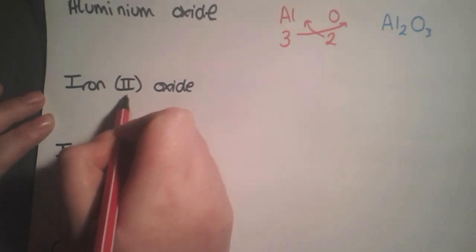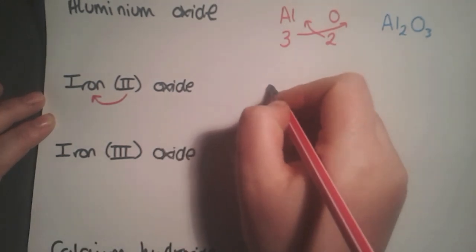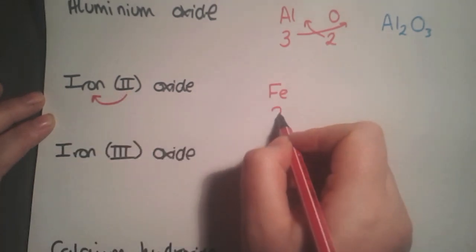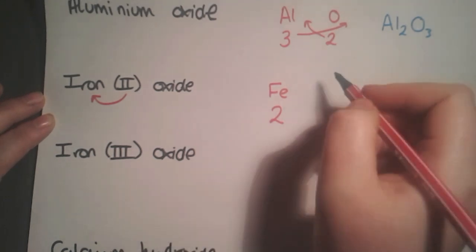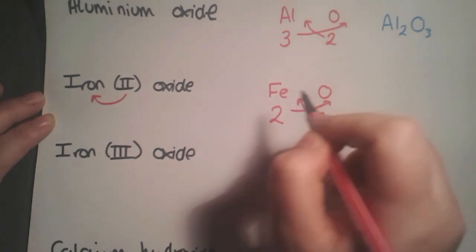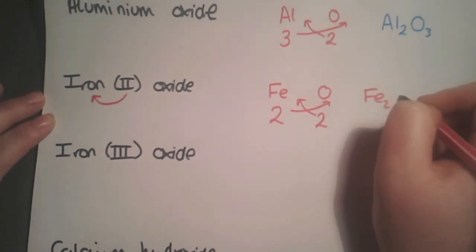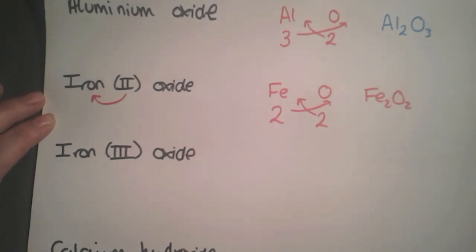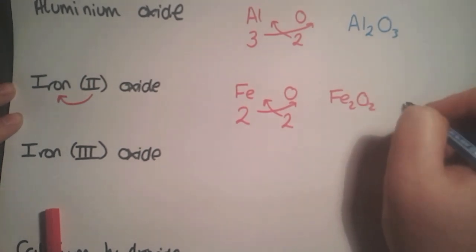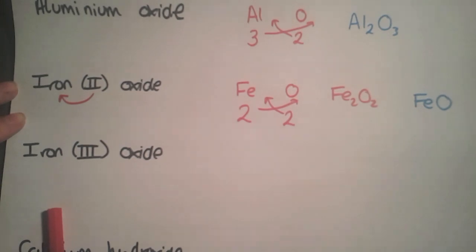We have Roman numeral II, which is the valency for iron. Iron's symbol is Fe with valency two. Oxygen we've seen before. Swapping them over gives Fe2O2. When this happens, you need to cancel the numbers to get the simplest formula: FeO, as both numbers divide by two.